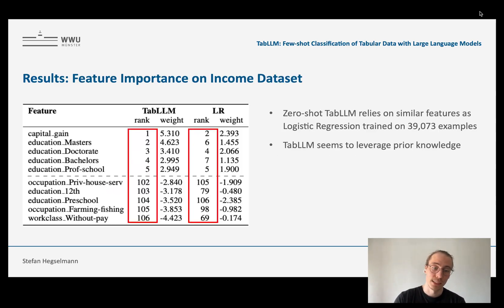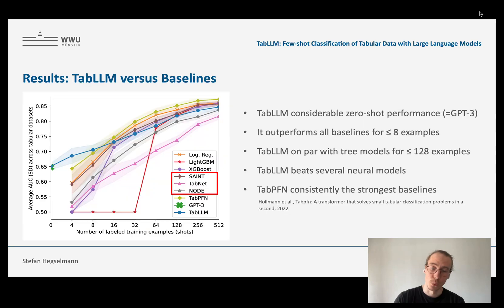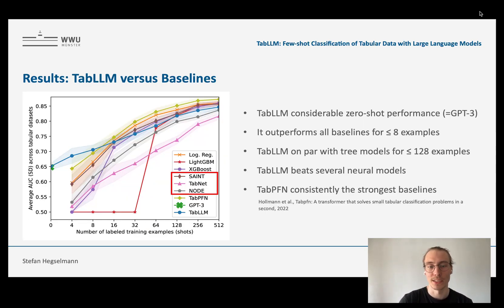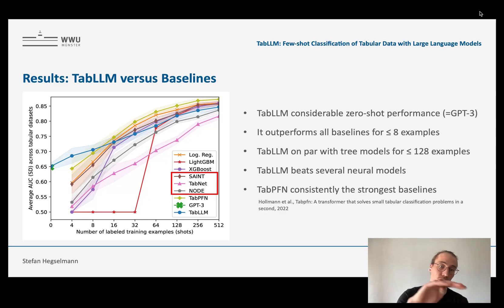Lastly, tabPFN — a recently introduced Bayesian neural network architecture trained on synthetic data — is consistently the strongest baseline in our experiment, shown as the greenish curve on top.